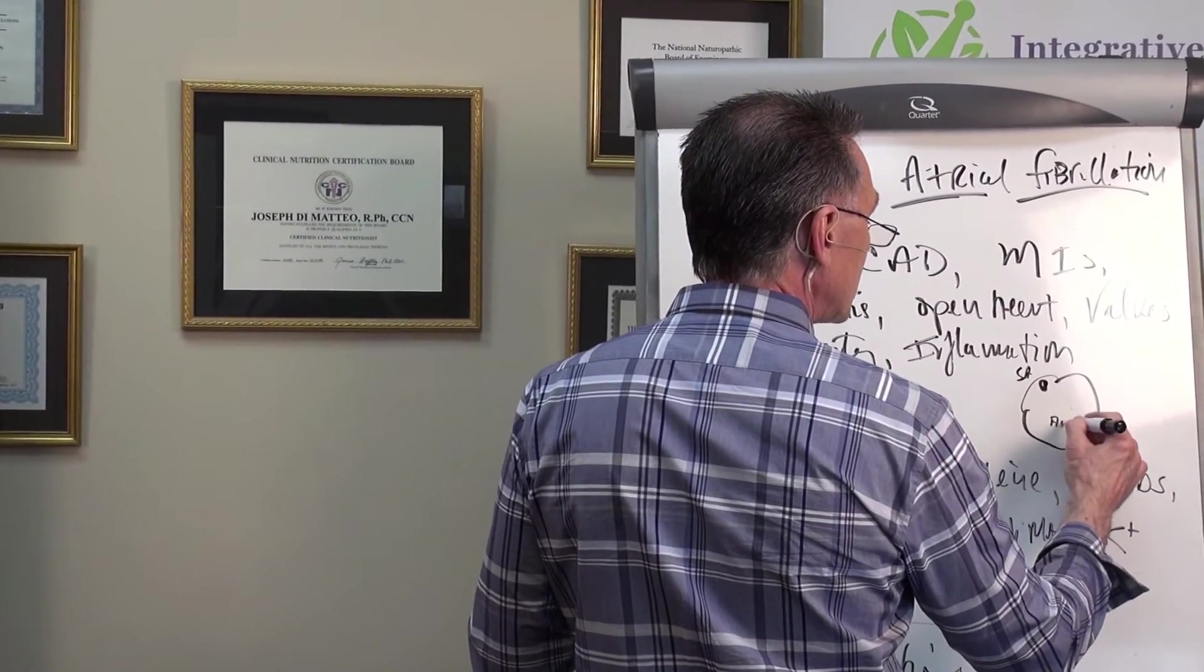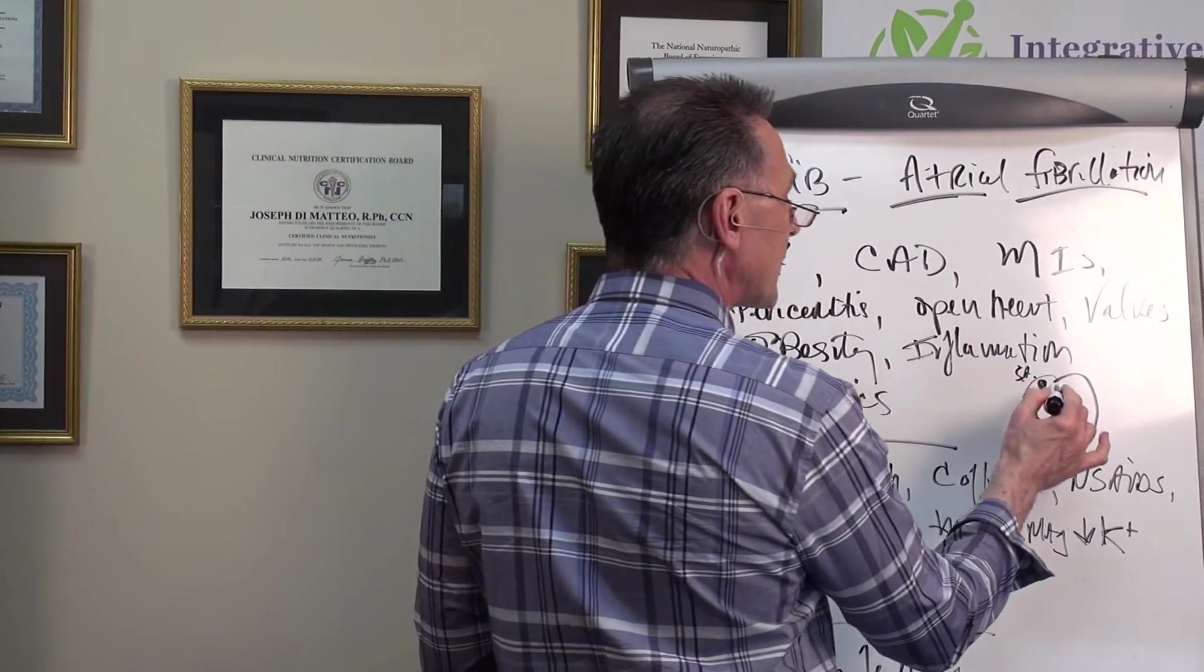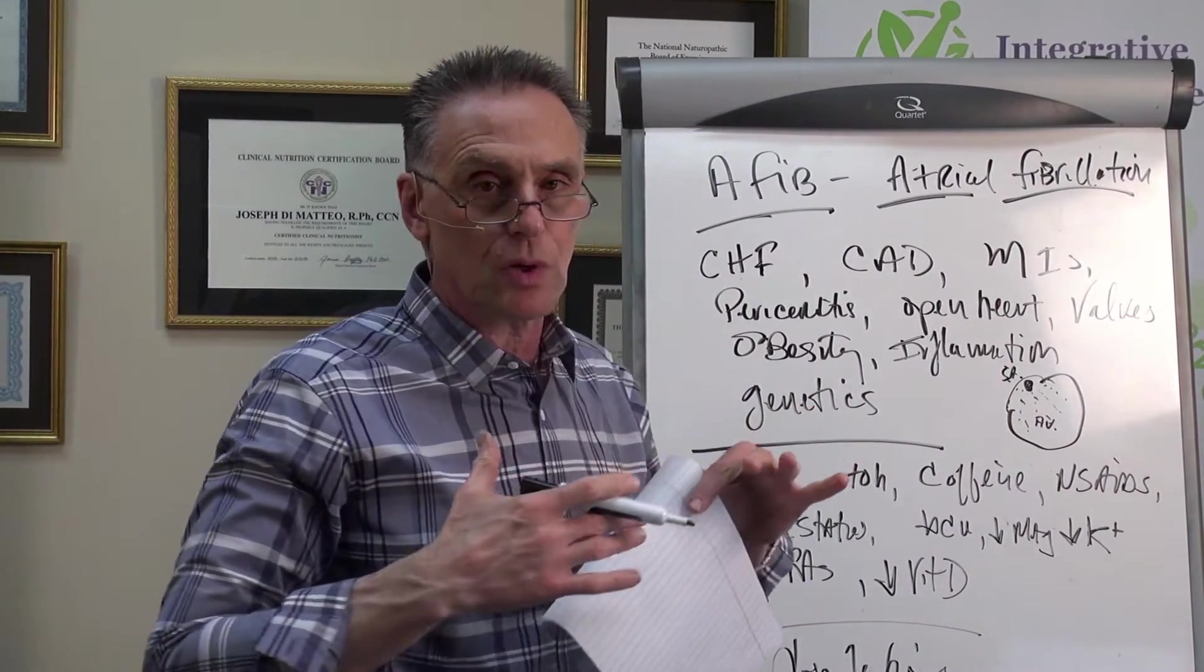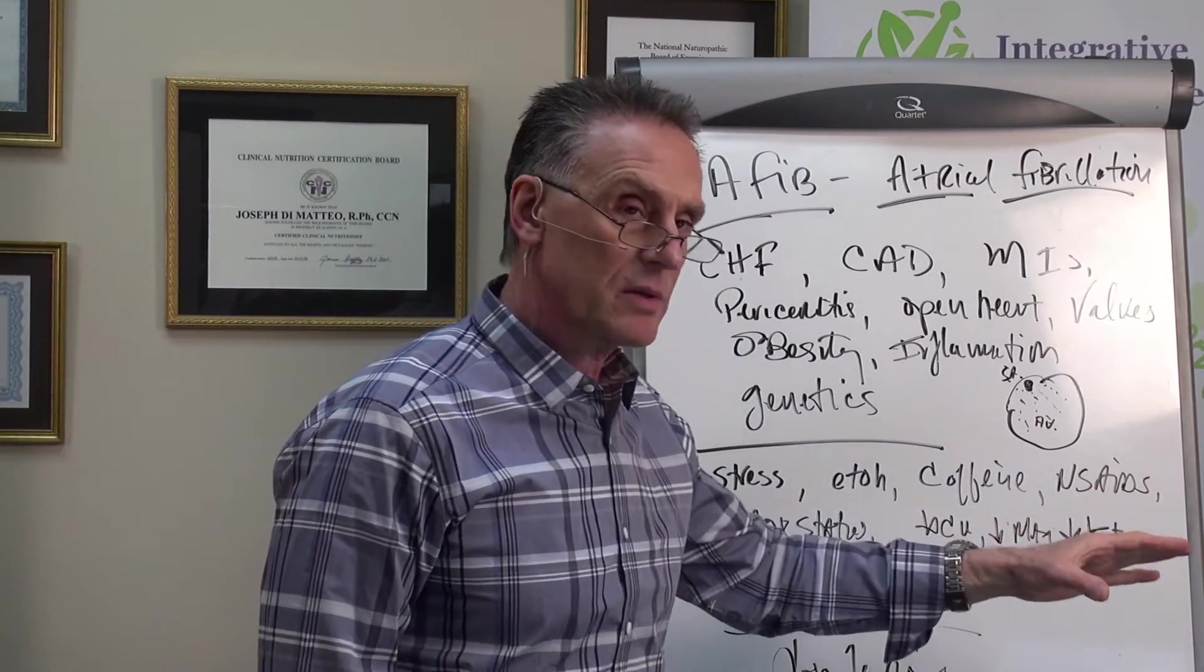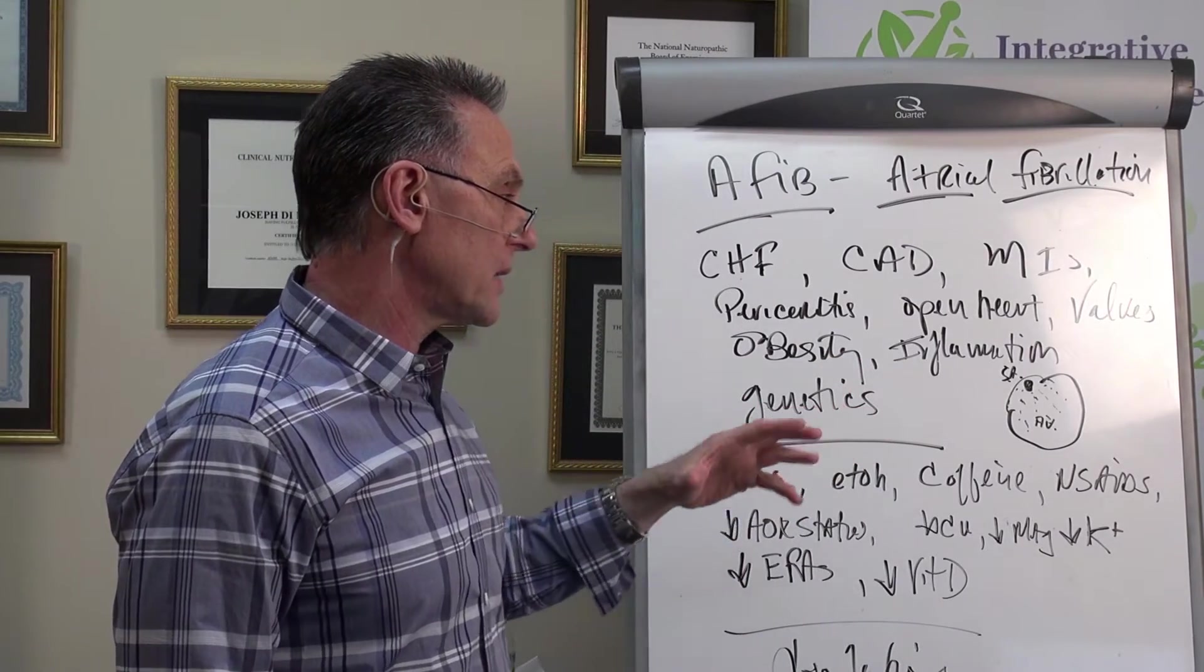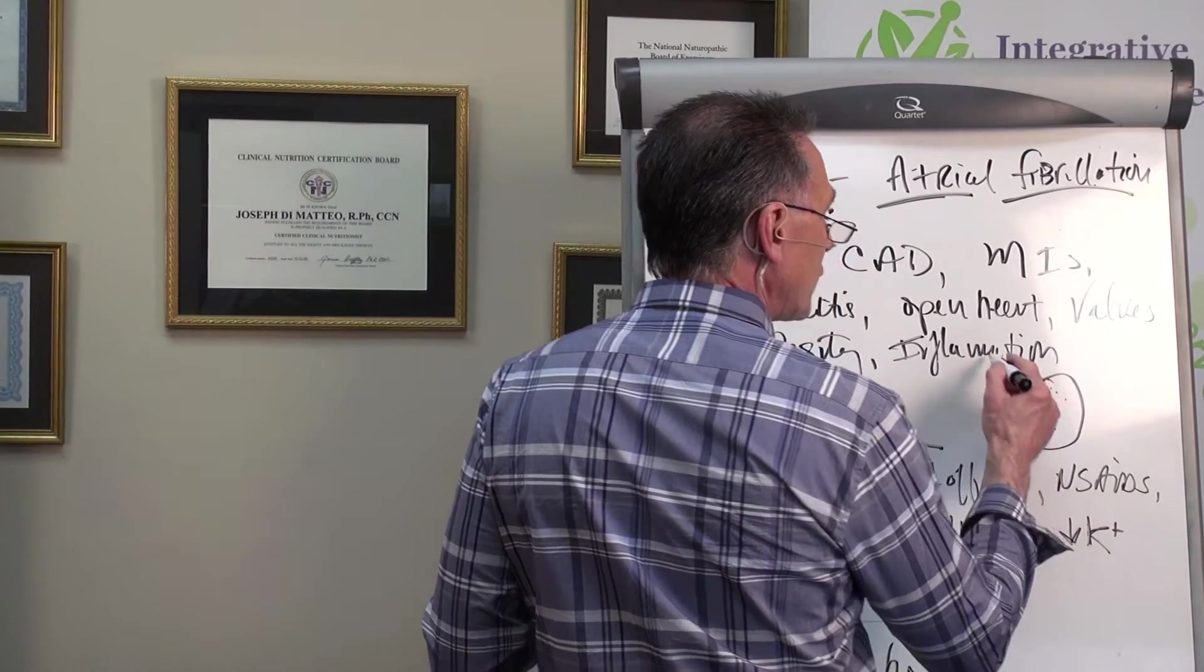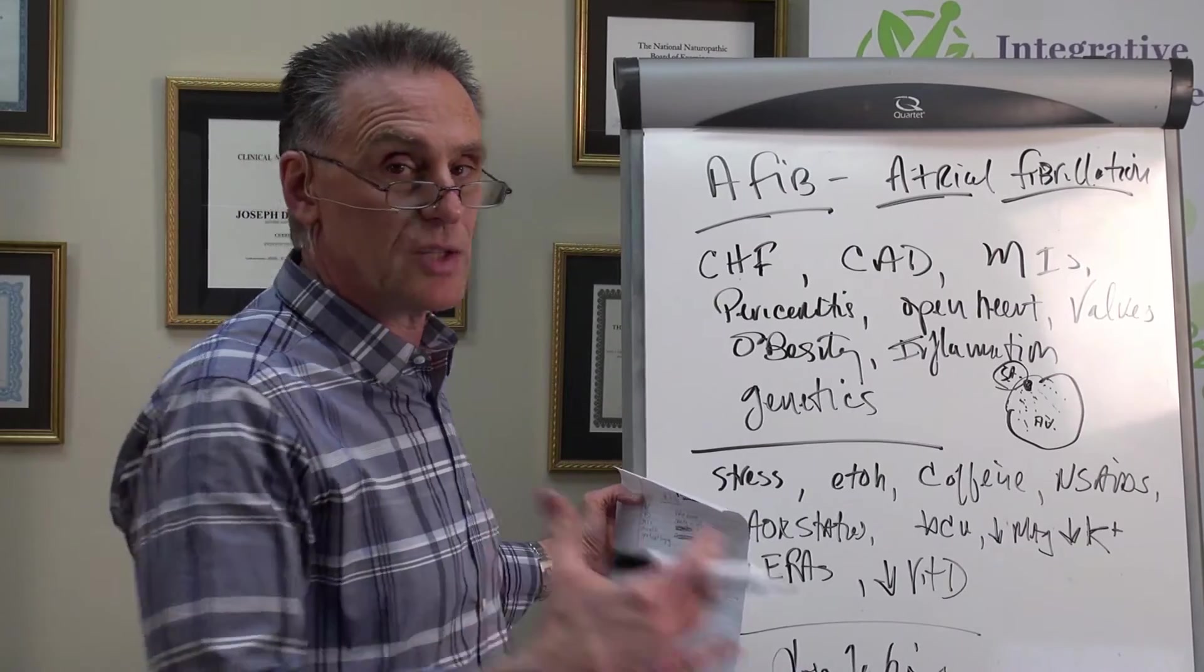There's a particular node. The SA node, I believe it's the SA node. And there's an AV node, atrioventricular, but the SA node, sinoatrial node is up top. And from this, there are signals in essence that are sent, electrical stimuli that goes throughout a wave of electrical current.